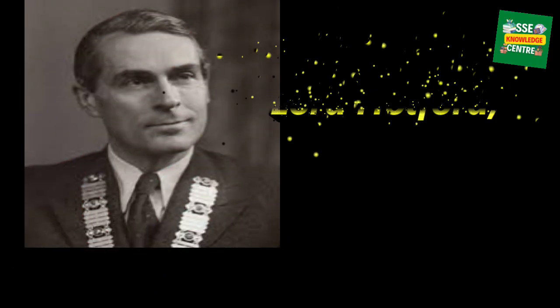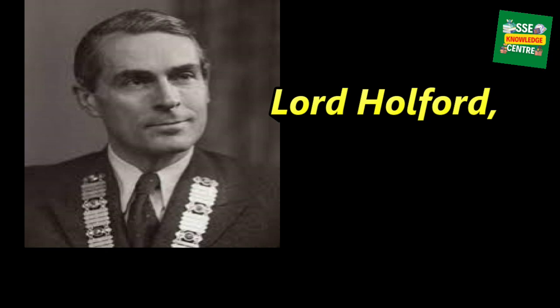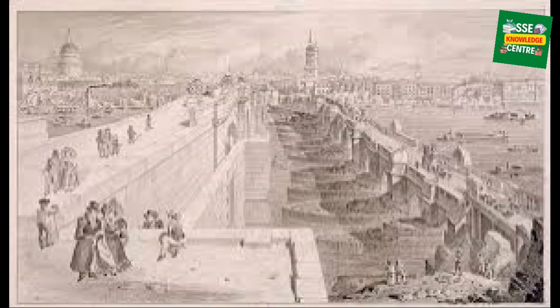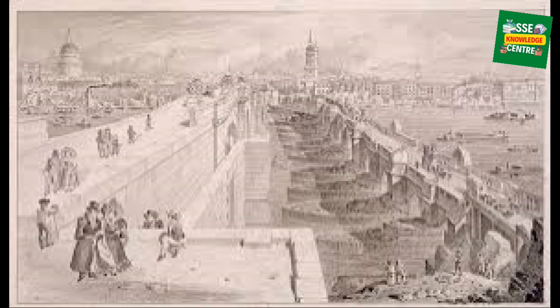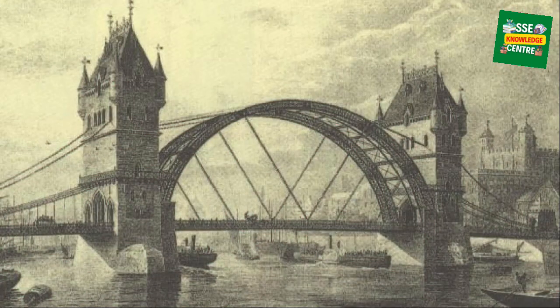It's important to note that the famous nursery rhyme 'London Bridge is Falling Down' refers to the medieval bridge rather than the current structure. The rhyme has contributed to the misconception that the current London Bridge is the historic one. Today, London Bridge serves as a vital transportation route and an iconic symbol of the city's history.